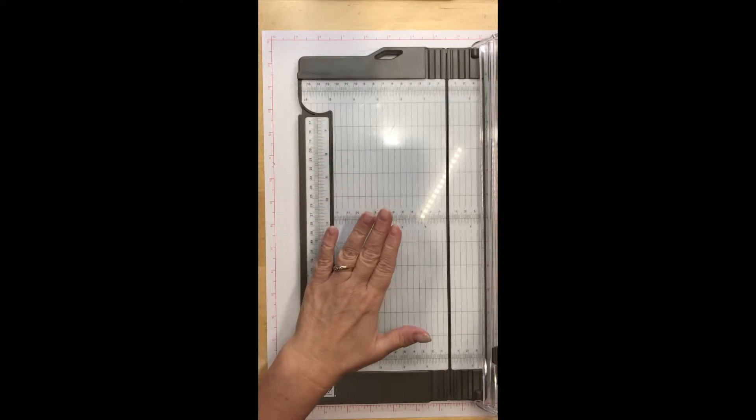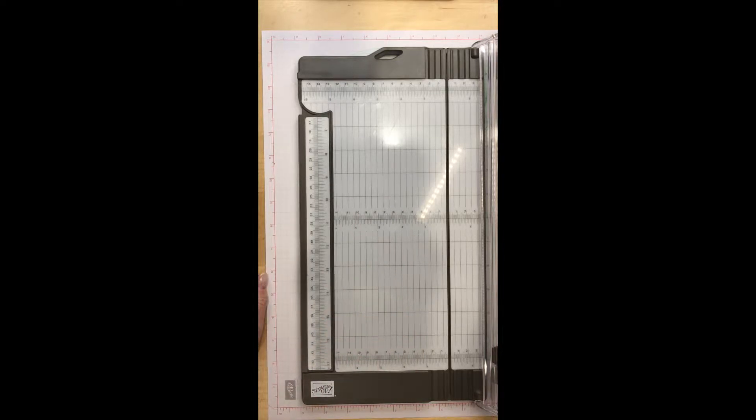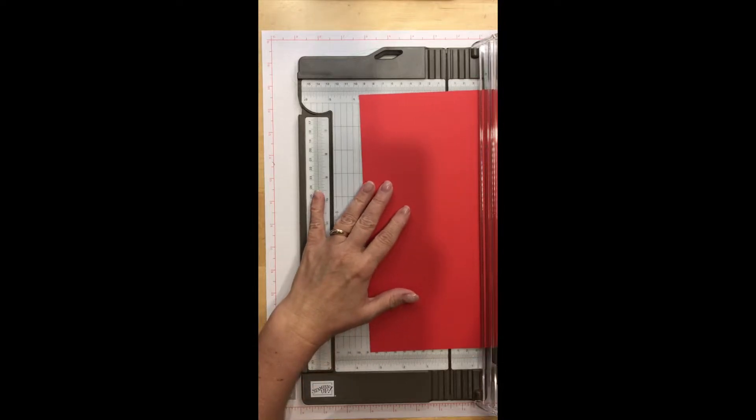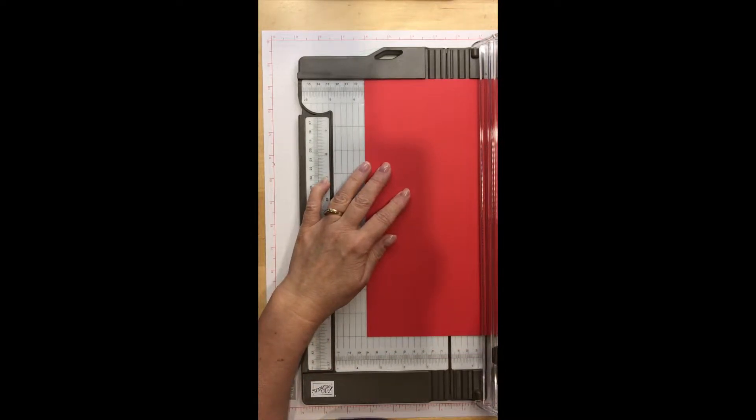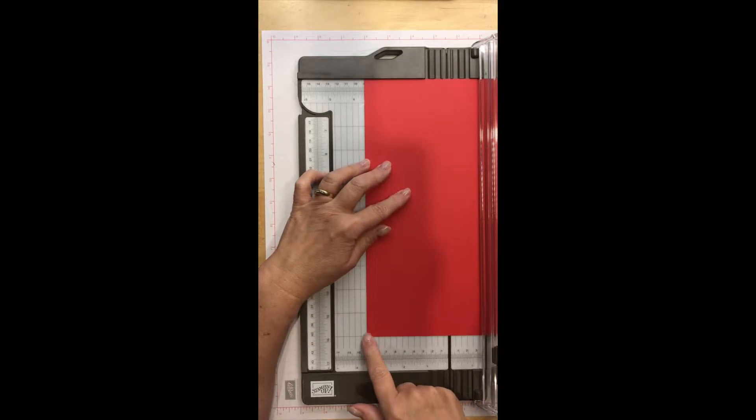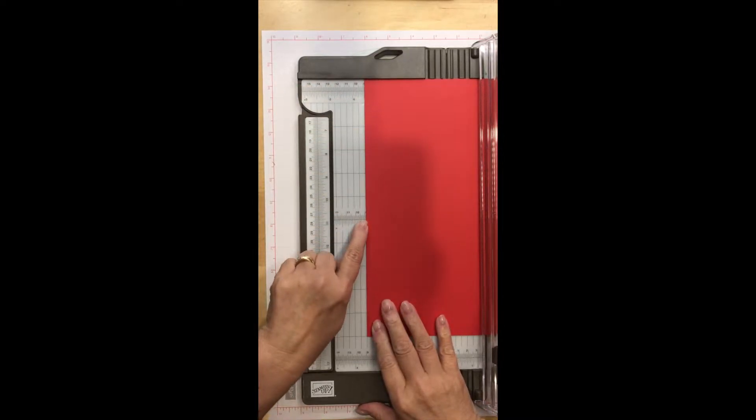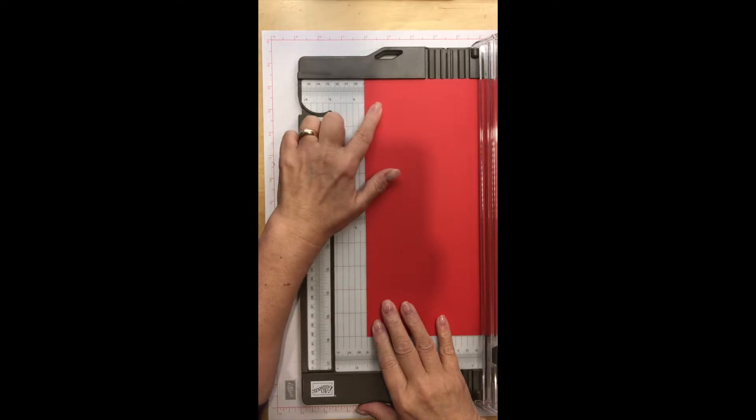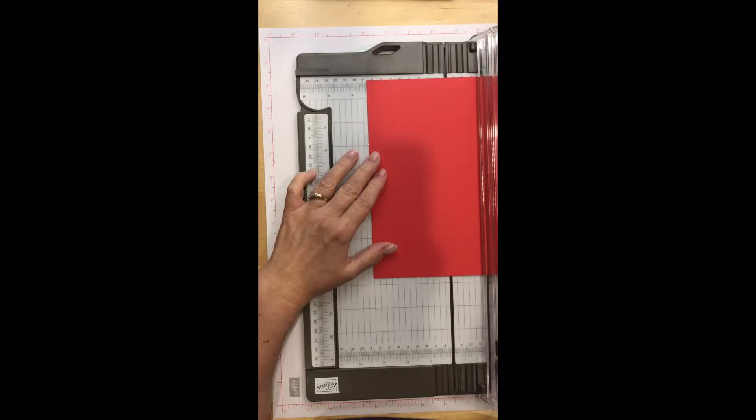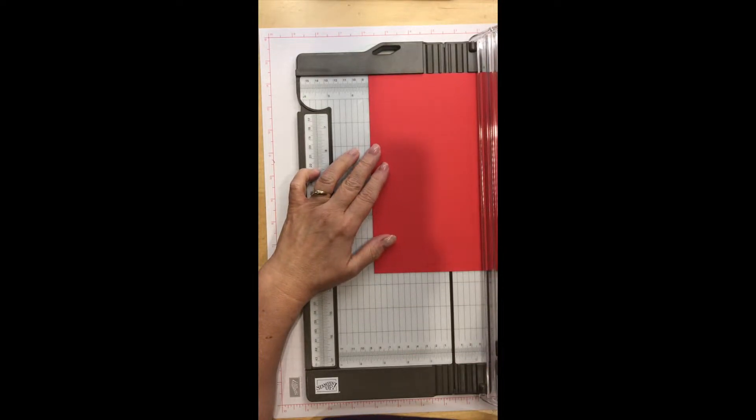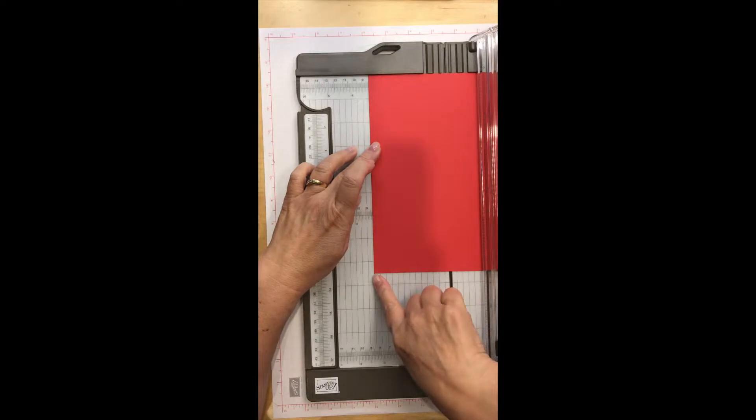There are measurements in the middle and also at the bottom, and also along the extended arm here. What's great about this is if you're cutting a large piece of cardstock, you can easily see—if I want to put this at three and a half inches, I can see three and a half at the bottom and at the top, but I also have this extra one in the middle so I can really make sure that I'm cutting that straight all the way down.